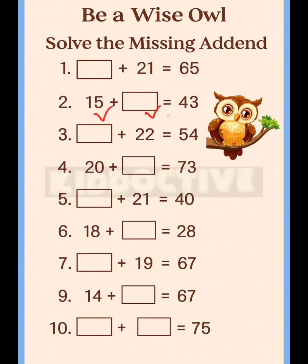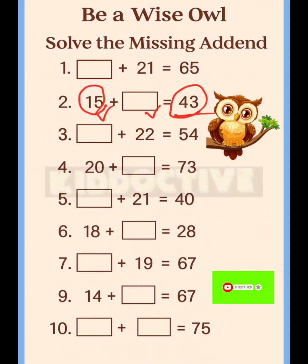Now the second one: 15 plus dash equals 43. 43 is the big one and we already have one smaller one, so we are going to subtract 43 minus 15.